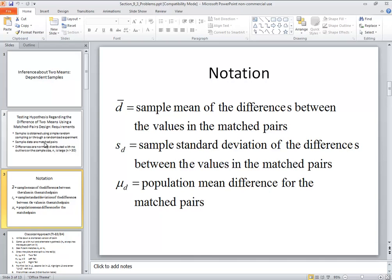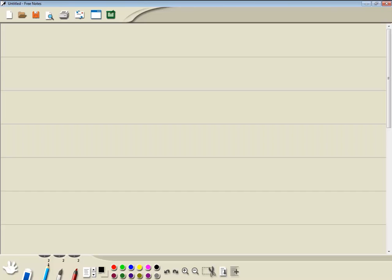Some notation you see, D bar, that's the sample mean of the differences between the values and the matched pairs. So you got for example like a before and after number, like before number is 20 and the after number is 10. The difference between them, D, would be just subtracting them. Well, you do that for each one of your sets of data and then D bar would be adding those numbers together and dividing by the total. So just your average of the differences. Now S sub D is a sample standard deviation of the differences.